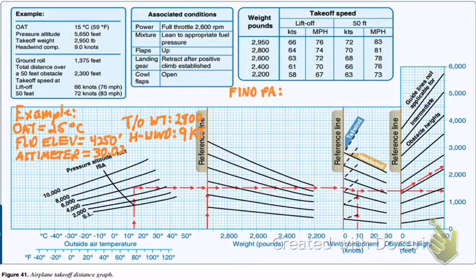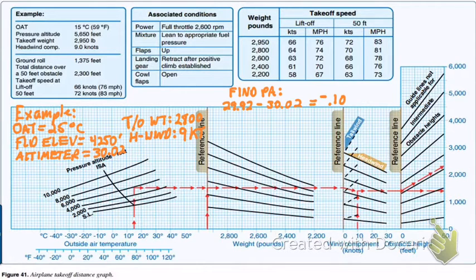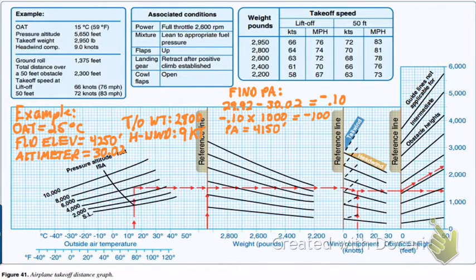First, we need to find our pressure altitude. To do that, we subtract our current altimeter setting from the standard altimeter, which yields negative 0.1 inches of mercury. Then we multiply that by 1,000 for our standard 1-inch-per-1,000-foot lapse rate, giving us a correction factor of negative 100. We then add that to our field elevation for a pressure altitude of 4,150 feet.